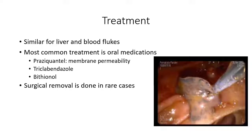Since liver flukes and blood flukes are related and have similar body structures, they can actually be treated with the same medications. The most common treatment is oral parasitical medication. Probably the most well-known is praziquantel, which affects the permeability of the parasite's membrane, causing the flatworm to leak, dehydrate, and die. Other medications include bithionol, and triclabendazole, which got its start as a cattle medication — it has agricultural uses in the U.S. but is not, to my knowledge, available for human use in the U.S. and Canada. Surgical removal is rare but does happen; I've included a picture of a common liver fluke being removed from a bile duct by forceps.